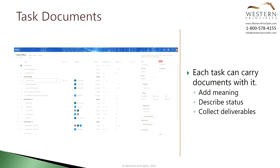Each task can also have attachments or documents attached to it. Like notes, these documents can be used for adding additional information to the task and describing progress. You can also use attachments to collect the task's deliverables. To add a document, bring up the information panel and scroll down to find the Add Attachment button. From here, you can add documents from your PC or from SharePoint, and you can also add website or intranet URLs. When you've added the document, it shows up on the information panel and also as a paper clip in the Quick Look column.